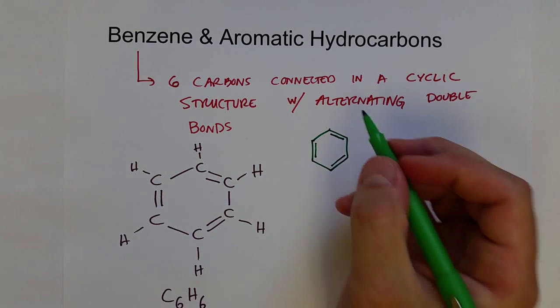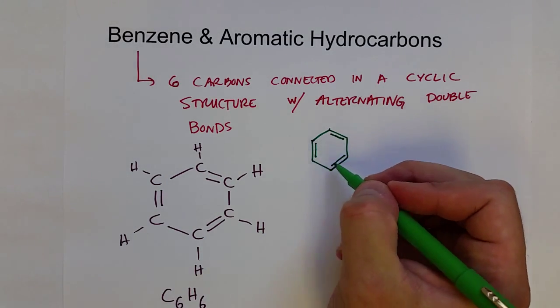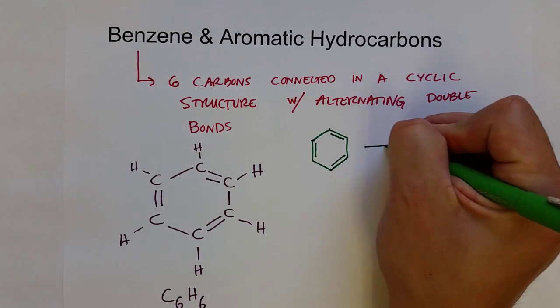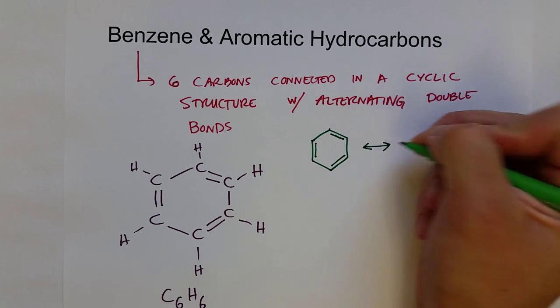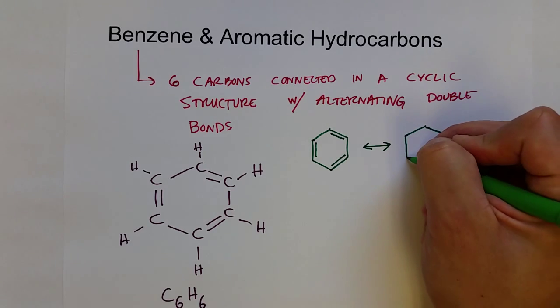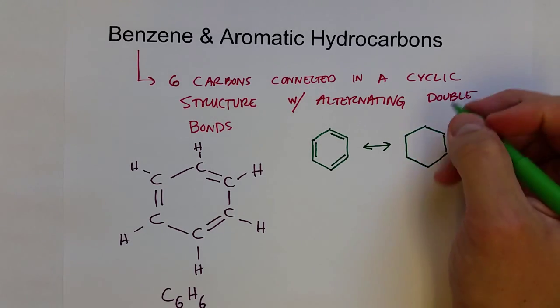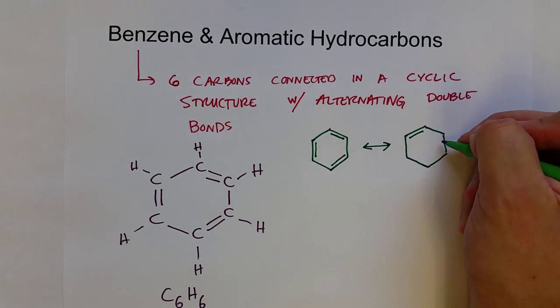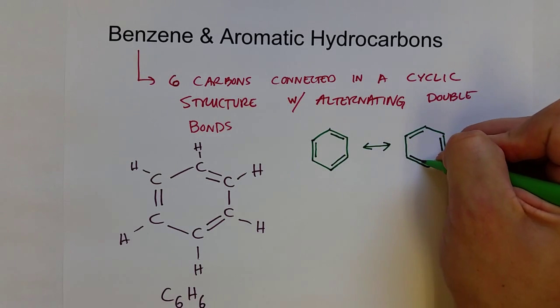It turns out that these double bonds resonate, or move around, this hydrocarbon to create what is known as an aromatic ring. And so it goes back and forth between these two structures. Where this double bond moved up here, this one moved down here, and the last double bond moved over here.